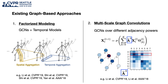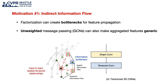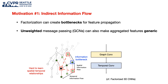First, factorized modeling of spatial-temporal features, and second, multi-scale graph convolutions for spatial reasoning. Specifically, factorized modeling means that we are learning spatial-temporal features by interleaving spatial and temporal modules, similar to how factorized CNNs learn features from RGB videos. However, we argue that such formulation hinders the direct information flow for learning spatial-temporal dependencies, which requires joints with strong correlation to have high importance to each other. Factorized modeling may not achieve this because it can create feature bottlenecks at joints with high node degrees, where features can also become generic due to unweighted GCN aggregation.